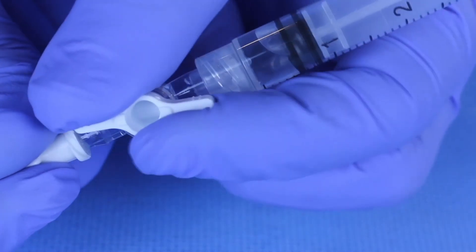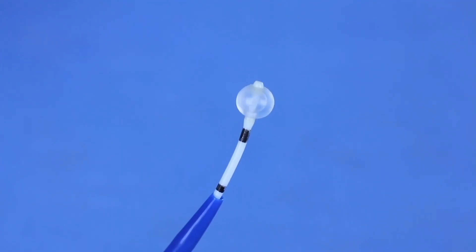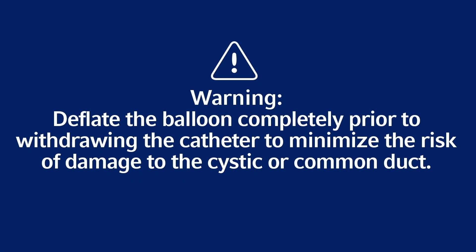After cholangiogram is completed, turn the lever of balloon stopcock parallel to catheter. Aspirate to deflate balloon. Warning: deflate the balloon completely prior to withdrawing the catheter to minimize the risk of damage to the cystic or common duct.